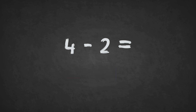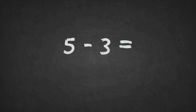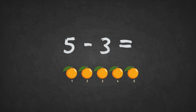4 minus 2 equals 1, 2. The answer is 2. 5 minus 3 equals 1, 2. The answer is 2.